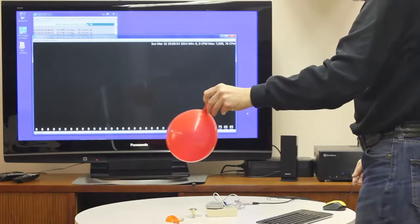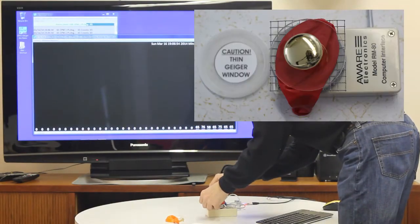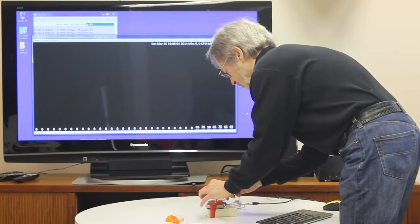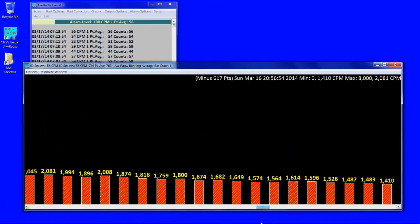After 30 minutes or so, we deflated the balloon and placed it atop the Geiger. The system was left counting overnight. The number of counts in each minute interval decayed to background levels in about 6 hours.